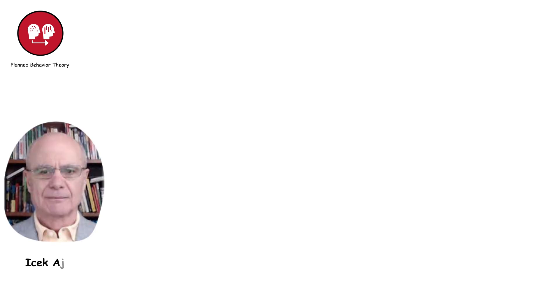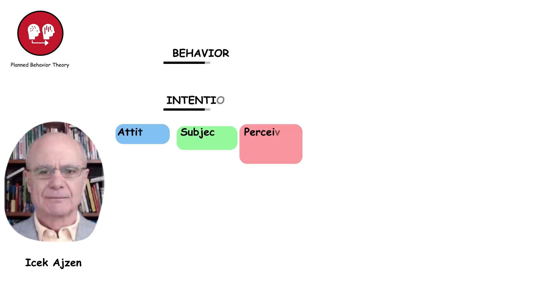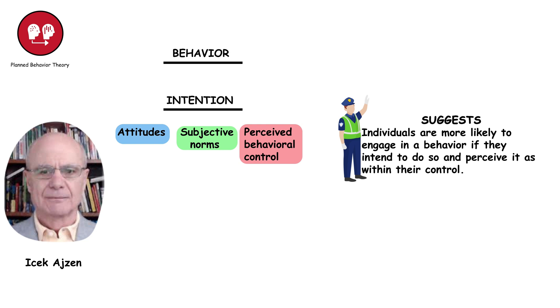Planned behavior theory, developed by Icek Ajzen, posits that behavior is determined by intention, which is influenced by attitudes, subjective norms, and perceived behavioral control. It suggests that individuals are more likely to engage in a behavior if they intend to do so and perceive it as within their control.